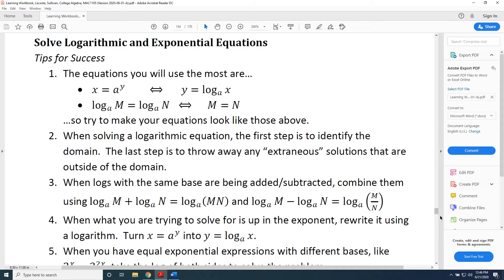Tip three, when logs with the same base are being added or subtracted, combine them using rule six or rule seven. Rule six says log base a of m plus log base a of n equals log base a of the product mn. And to use that rule, all logs have to have the same base and have to have no numbers in front of the word log.